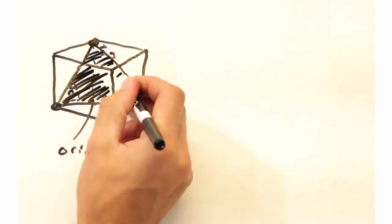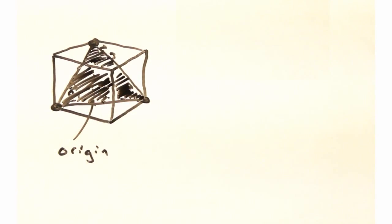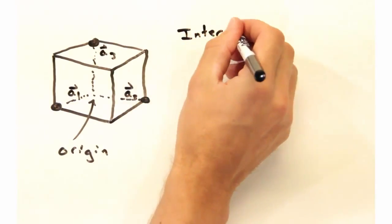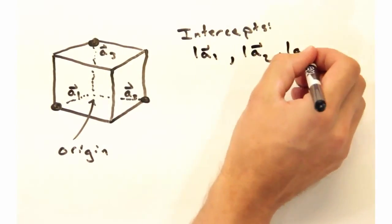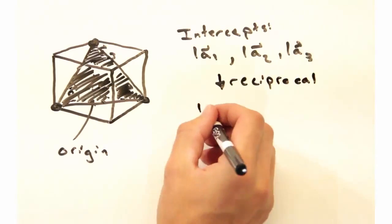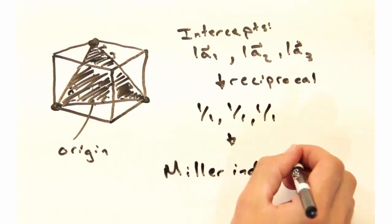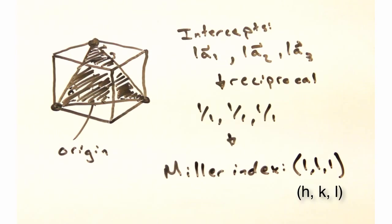First, we need to start by labeling where the plane intersects each lattice vector. Looks like it intersects at 1a1, 1a2, and 1a3. Indeed they do. Now we'll take those numbers and invert them. The three numbers are referred to as the h, k, and l values of the plane. Our result is the Miller indices of this plane, so this would be called the 1-1-1 plane.